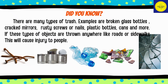There are many types of trash. Examples are broken glass bottles, cracked mirrors, rusty screws or nails, plastic bottles, cans, and more. If these types of objects are thrown anywhere, like roads or sidewalks, this will cause injury to people.